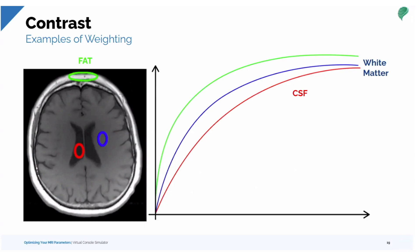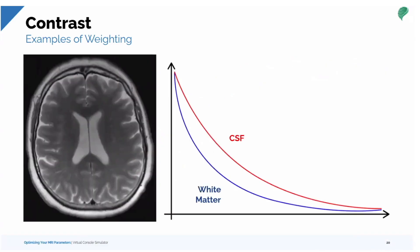Some examples of contrast weighting: on a T1 curve, fat has the shortest T1 relaxation time in the body — represented by the green curve. White matter in the internal capsule has an intermediate relaxation time. CSF in red has the longest T1 relaxation time. For T2 relaxation, the CSF in the lateral ventricles is hyper-intense to the white matter. Subcortical white matter is darker than gray matter and obviously darker than CSF, as this curve demonstrates.